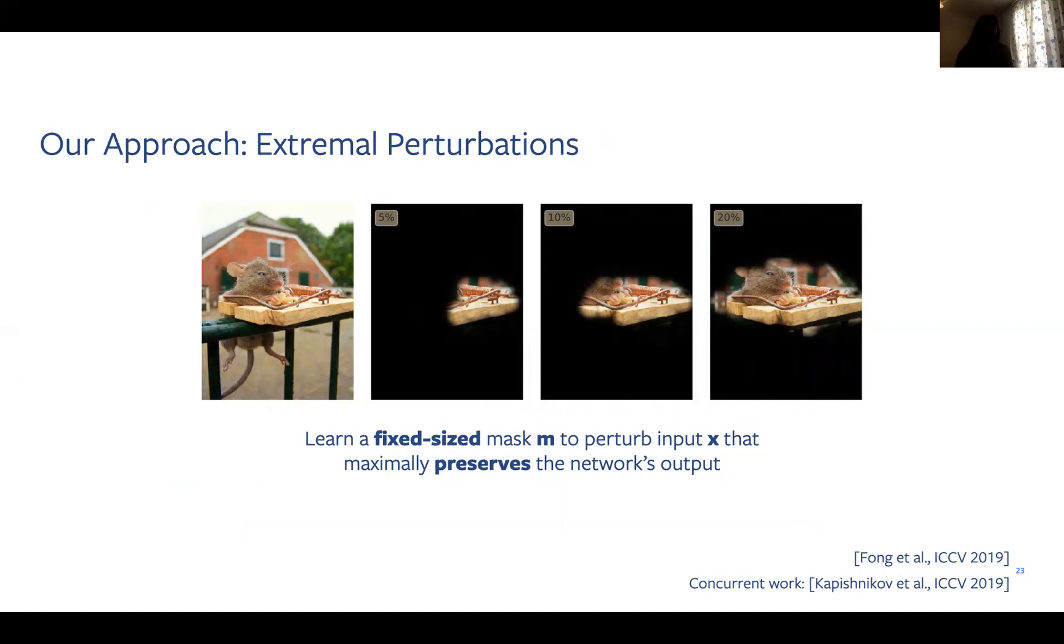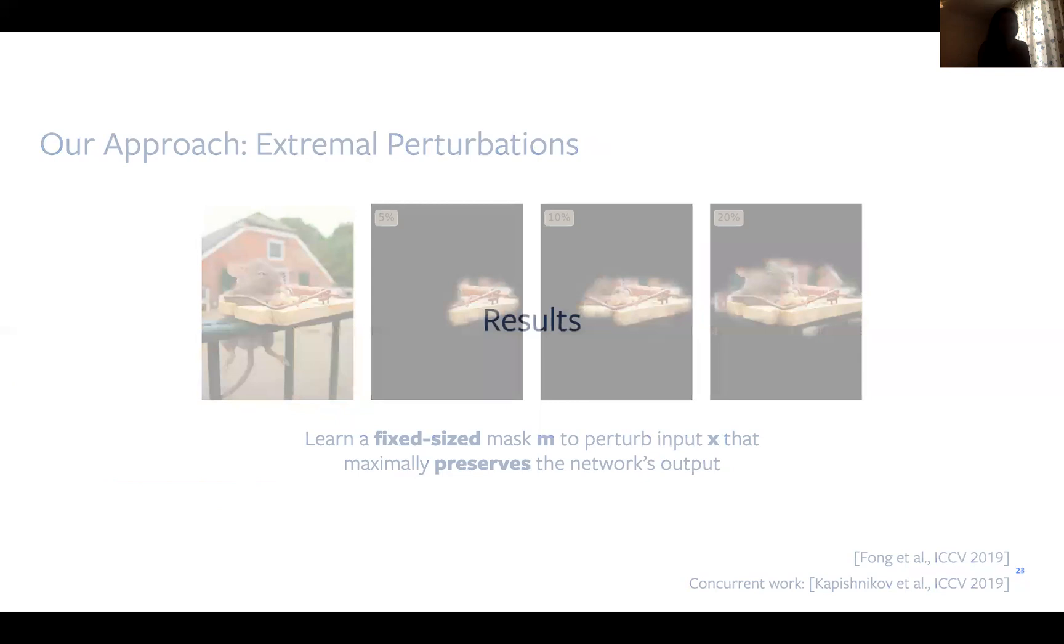Last year, we revisited our original method and introduced several technical innovations to improve our method's stability and sensitivity. The main novelty lied in learning fixed size masks with different area budgets. This allows us to more scientifically study the relative importance of several image regions. In this mouse trap example, we noticed that the spring is most important, followed by the mouse's nose, and then more of the mouse's body, and the mouse trap. Concurrent work also included an area constraint mechanism and was presented at the same time as ours.